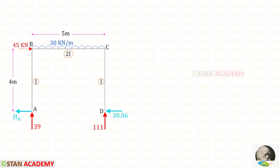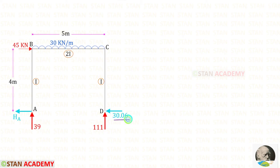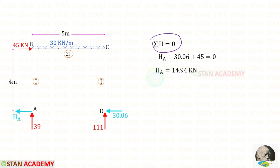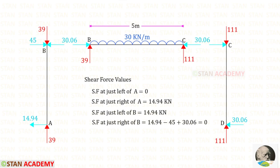Now let us take the original frame. We know that columns AB and CD have the same height of 4 m, so the vertical reactions which we calculated previously will remain the same. For HD we have got a positive value, which means our assumption is correct — we assumed that HD is acting towards the left side, and since we got a positive value, it is really acting towards the left side. Now using this rule we can find HA.